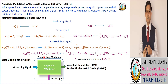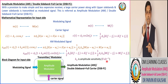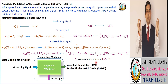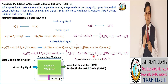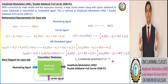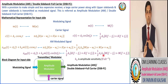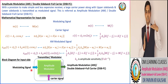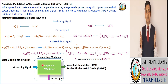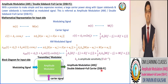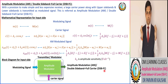The amplitude sensitivity factor ka is a very important parameter utilized at the envelope detector at the receiver end for proper recovery of the modulating signal. It is very important to include ka in the modulated signal. As per the block diagram, the modulating signal and carrier signal are fed into the amplitude modulator, which produces the output — the amplitude modulated signal, also known as the Double Sideband Full Carrier modulated signal.